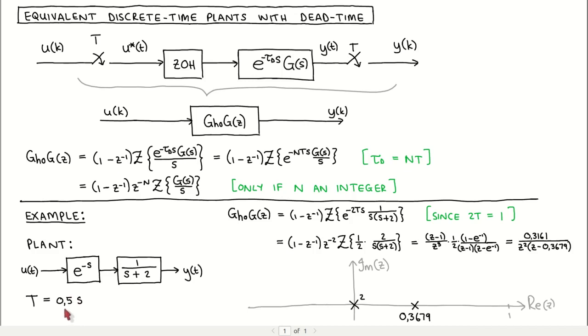This example is the same as the one we worked through in a previous video except for the time delay that has been added. The time delay is one second which can be written as two times the sampling period. Therefore n is equal to two which we substitute into our expression for the discrete time plant.